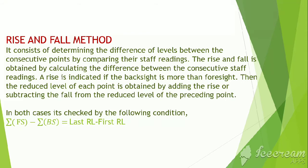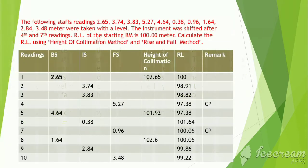In both rise and fall method and height of collimation method, the calculation is checked by the following condition: if the difference between summation of foresight and backside is equal to last RL and first RL's difference, then the calculation is true or correct.